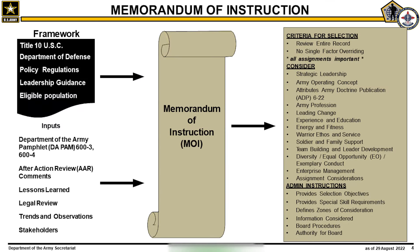Selection board operating instructions come in the form of an MOI. It is the principal document governing the operation of a board. The MOI's framework is a synthesis and interpretation of multiple inputs including U.S. law, DOD policy, Army regulation, and current senior Army leadership guidance. Its contents may vary as the Army's structure, strategy, procedures, and demands continuously evolve. The MOI delineates the board's mission, addresses goals, selection objectives, outlines any specific skill requirements, and equal opportunity consideration. It does not mandate specific results to board members.